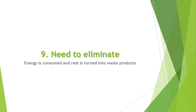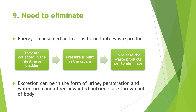Last but not least, the next physiological motive is the need to eliminate. Energy is consumed and the rest is turned into waste products. These are collected in the intestine and bladder, and then pressure builds in the organs to release the waste products. Excretion can be in the form of urine, perspiration, and water; urine and other unwanted materials are thrown out of the body to maintain the body's balance. These were all the factors that come under physiological motives and they play a key role in maintaining the homeostasis of the human body.